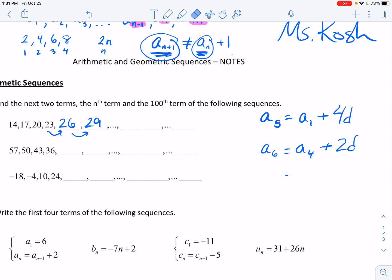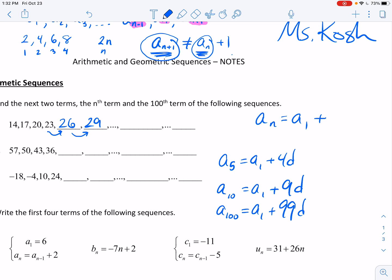Say I want to get the 5th term, and I know the 1st term. What I'm going to need to do, if I want to get to the 5th term, if I know the 1st term, what I need to do is I need to add that common difference 1, 2, 3, and then a 4th time to get to that 5th term. So a sub 5 would be equal to a sub 1 plus 4d. Let's say I want to find the 6th term, but I know the 4th term. Notice 6 is equal to 4 plus 2.